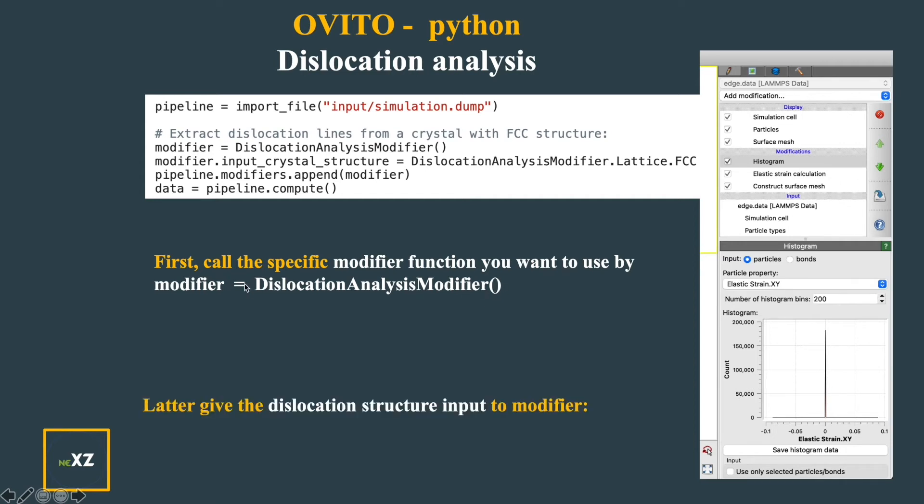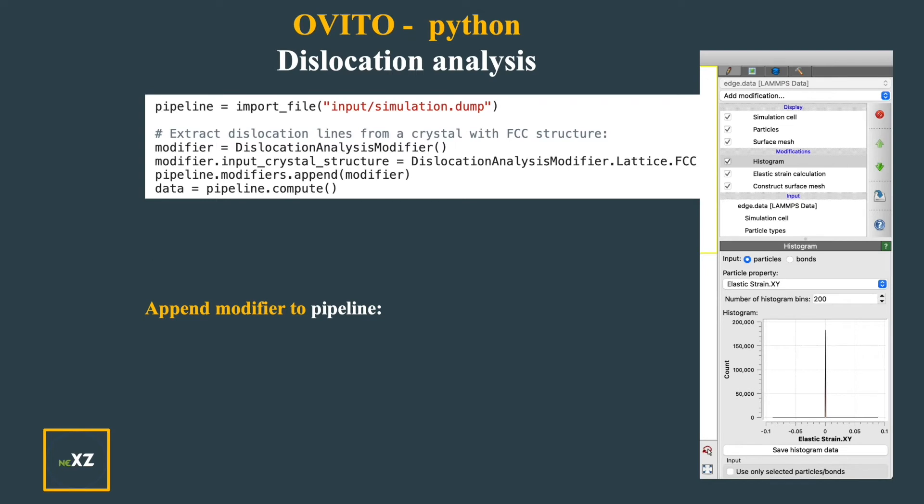Now I also give the input structure or the crystal structure of the input structure which is the FCC face centered cubic. So I use dislocation analysis modifier dot lattice dot FCC. Now I append the modifier to pipeline using pipeline dot modifiers append and in the brackets I give the modifier so I already have the information of the modifier.